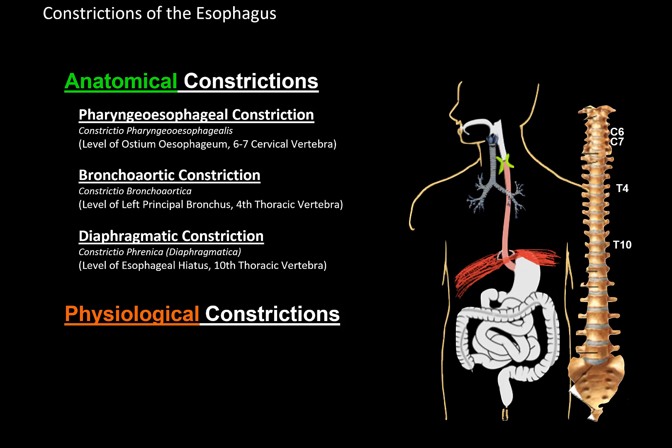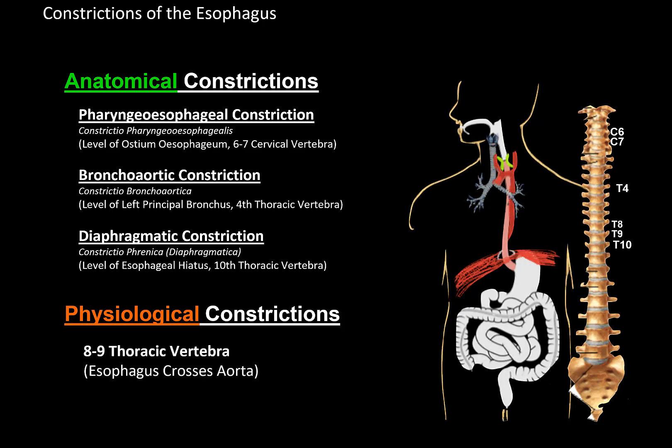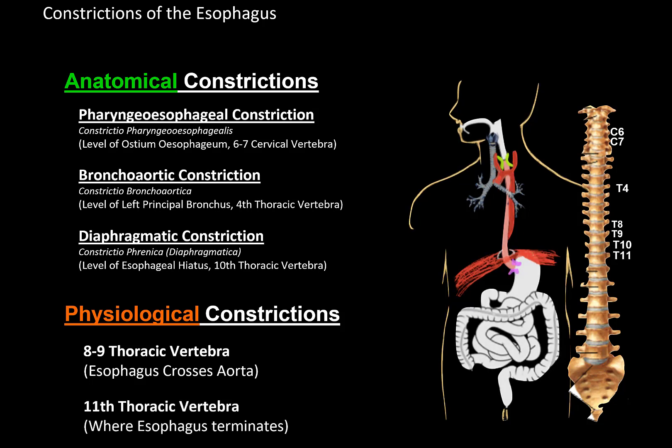Now the physiological constrictors — these are made of smooth muscles, controlled by the autonomic nervous system, and they relax after the body loses function. The first is at the level of the 8th–9th thoracic vertebrae, where the esophagus crosses the aorta. The last constrictor is where the esophagus terminates into the stomach at the region of the 11th thoracic vertebra — this is also called the lower esophageal sphincter.